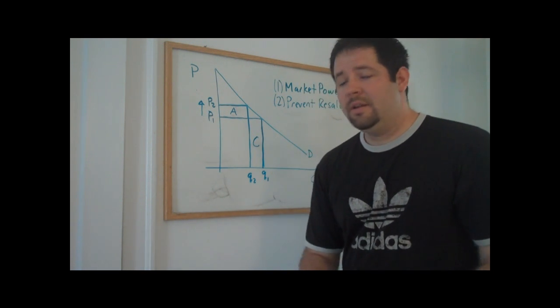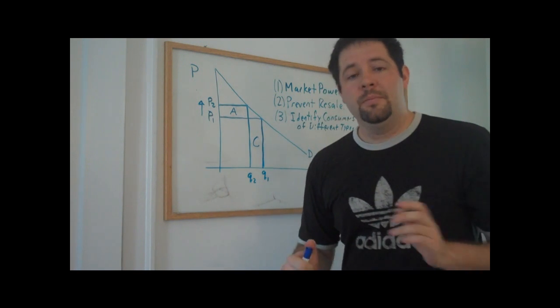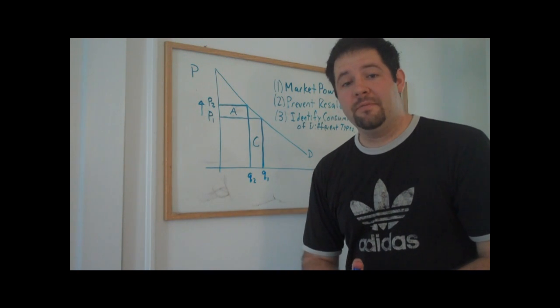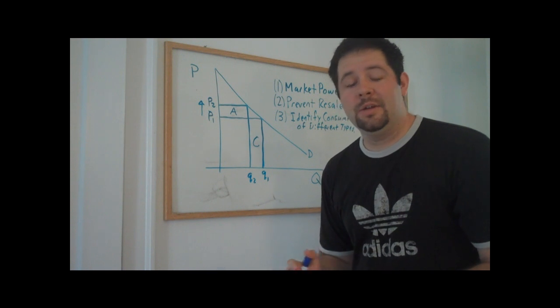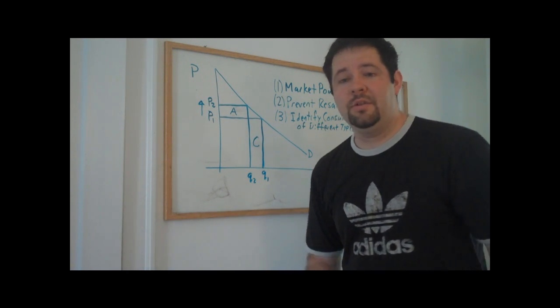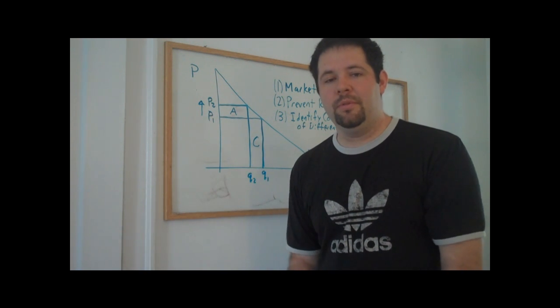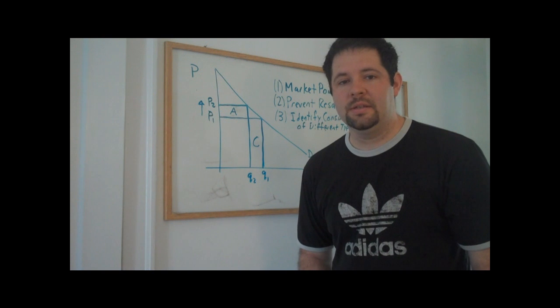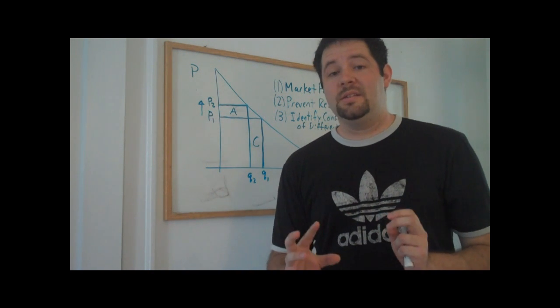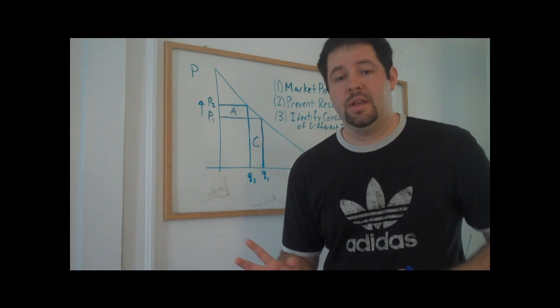The third one is equally important. The monopoly must be able to identify consumers of different types. In particular, the monopoly must be able to identify a student from a non-student at a movie theater to even be able to start to sell the products at different prices. The monopoly will have to have some way to distinguish the individuals based on what types of consumers they are.